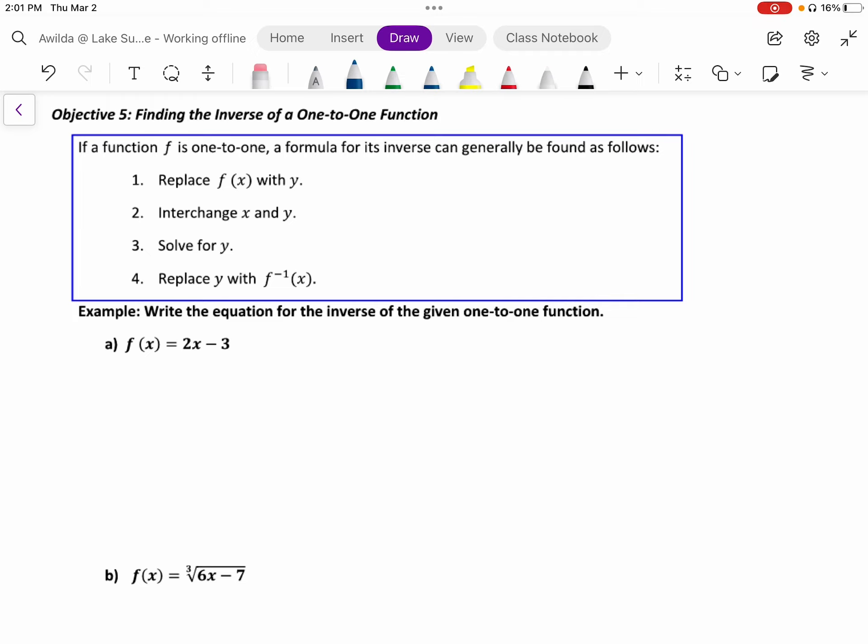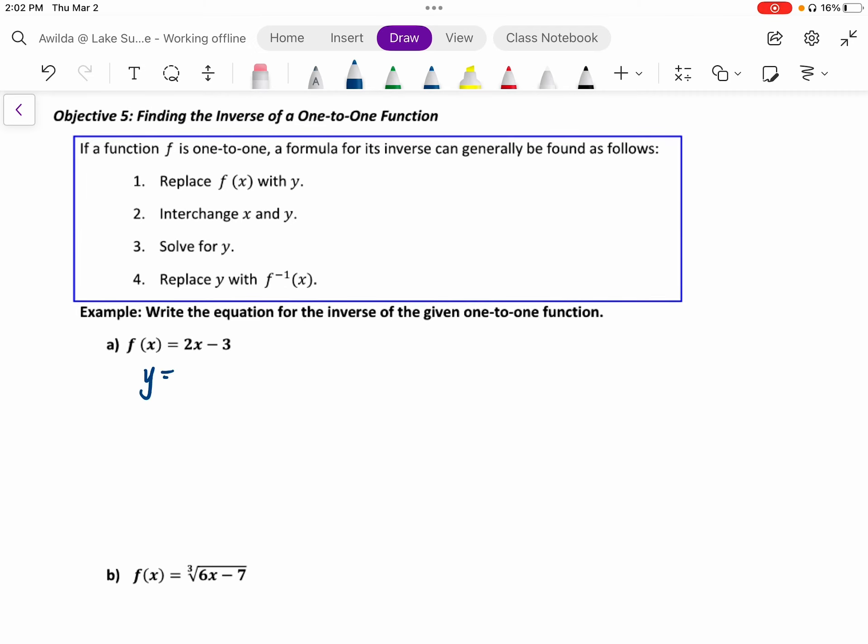Let's go through that with these two examples. First, we have f of x is equal to 2x minus 3. Step one is that we're going to replace the f of x label with the letter y. Next, we're going to interchange x and y. So where I see x, we're going to put y. Where I see y, you're going to put x. This is where x and y swap roles. Next, I'm going to isolate the new y variable. I'm going to start by adding 3 to both sides. Next, I'm going to divide both sides by 2. And I'm going to clean this up a little bit and swap sides just to make it look a little cleaner. So I'm going to write this as y is equal to 1 half x plus 3 halves.